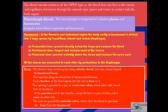The hemocoel in the thoracic and abdominal region is divided into three large spaces by two partitions: the dorsal and ventral diaphragm. There are three sinuses: the pericardial sinus, present dorsally below the tergum, which encloses the heart; and the perivisceral sinus, which is the largest and encloses most of the viscera.